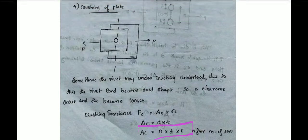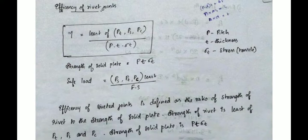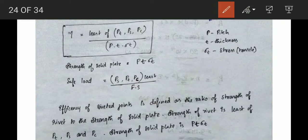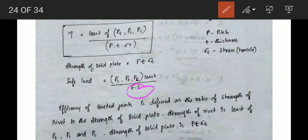The efficiency is calculated as the least value among Pt, Ps, and Pc divided by the strength of the solid plate. The strength of the solid plate is P × T × σt, where P is pitch, T is thickness, and sigma is the tensile stress. The safe load is the least of tearing, shearing, and crushing resistance divided by the factor of safety.